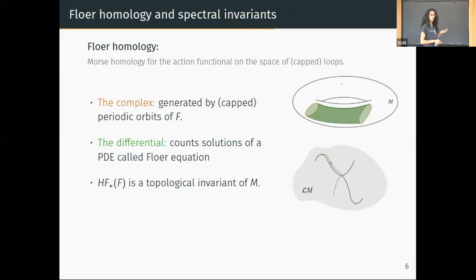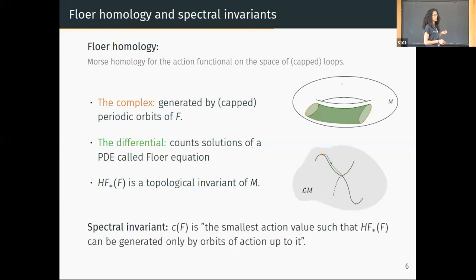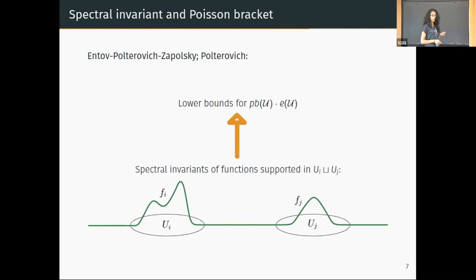Out of this construction we can define a dynamical invariant of the Hamiltonian f called the spectral invariant of f. Roughly speaking, this invariant measures the smallest action value that you can sort of generate the whole homology by considering orbits up to this action—the smallest value of the action functional that you need to see the total homology. These invariants are a very useful tool in studying dynamical properties of Hamiltonian flows. For example, you can use them to detect periodic points of the flow, or you can use them to study Poisson brackets—this was done by Polterovich and Zabolsky.